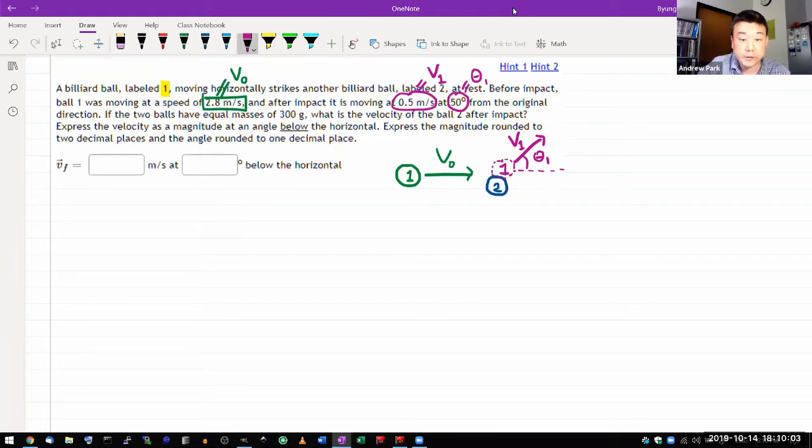From the original direction, if the two balls have equal masses, that makes things easier. If they both have mass M, it'll make algebra easier. Equal masses of 300 grams, what is the velocity of ball 2 after the impact? Express the velocity as a magnitude at an angle below the horizontal. So ball 2 will be going in some direction. And what we are being asked for is V2, question mark, and theta 2, question mark.